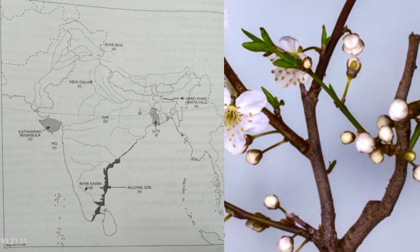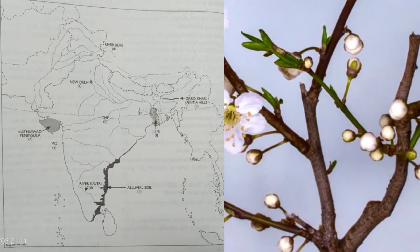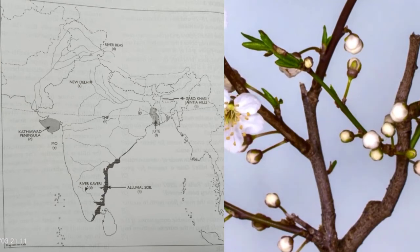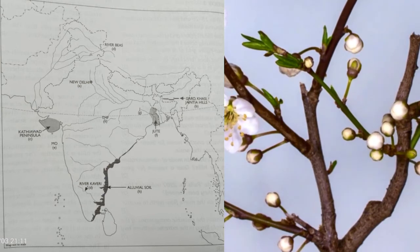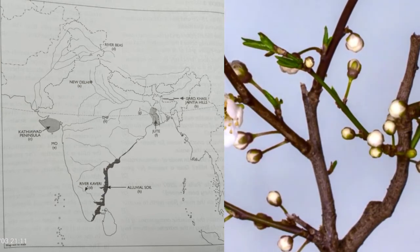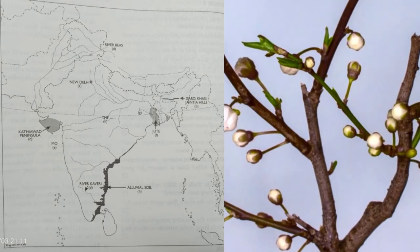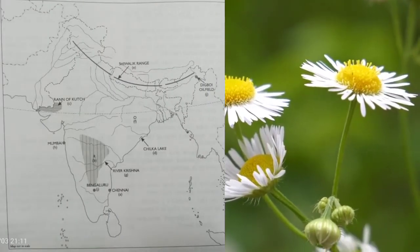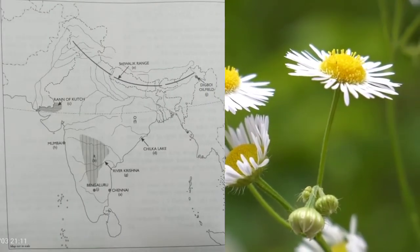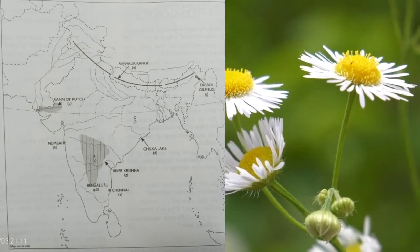'G' — mark 'J' over the coal field. 'H' — mark an area of alluvial soil south of the Tropic of Cancer. Next outline map: 'A' — a port on the east coast with an artificial harbour.